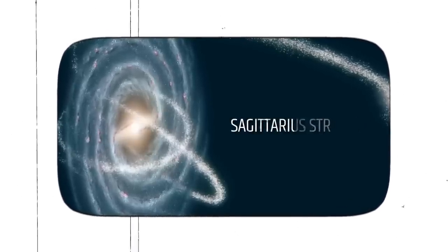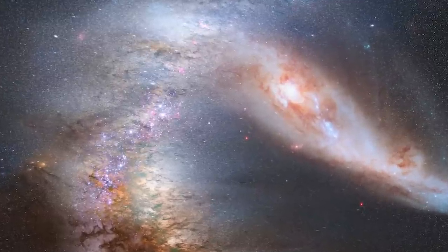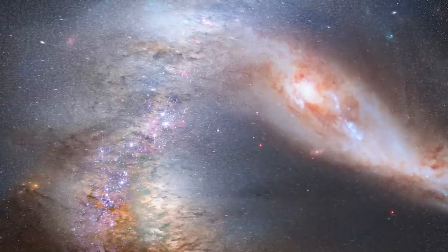The Antenna Galaxies are a pair of interacting galaxies located approximately 45 million light years away in the constellation Corvus. The galaxies are currently in the process of merging, and the collision has triggered intense bursts of star formation.